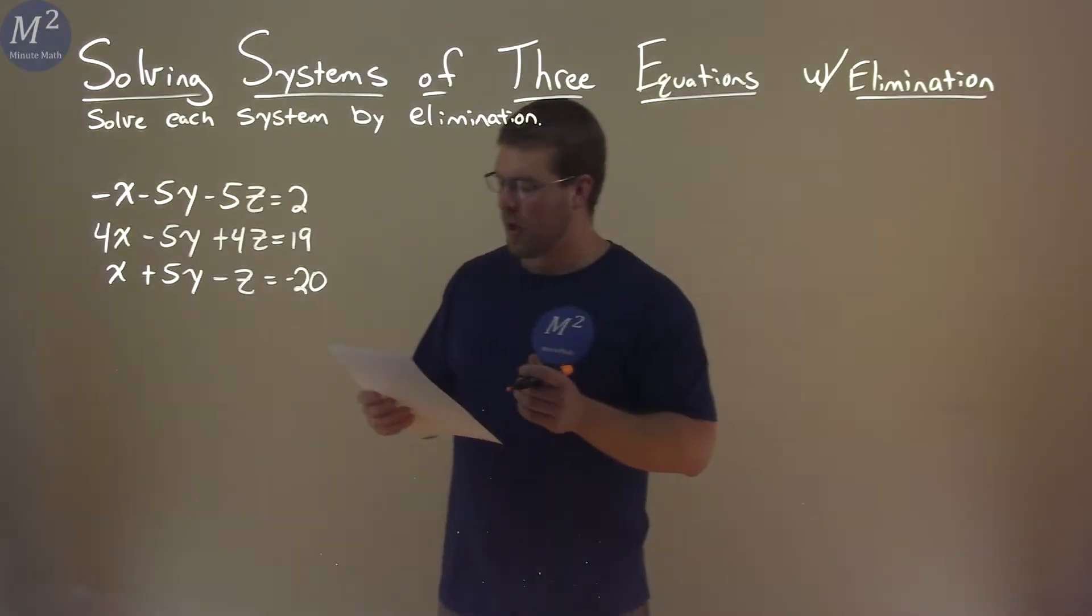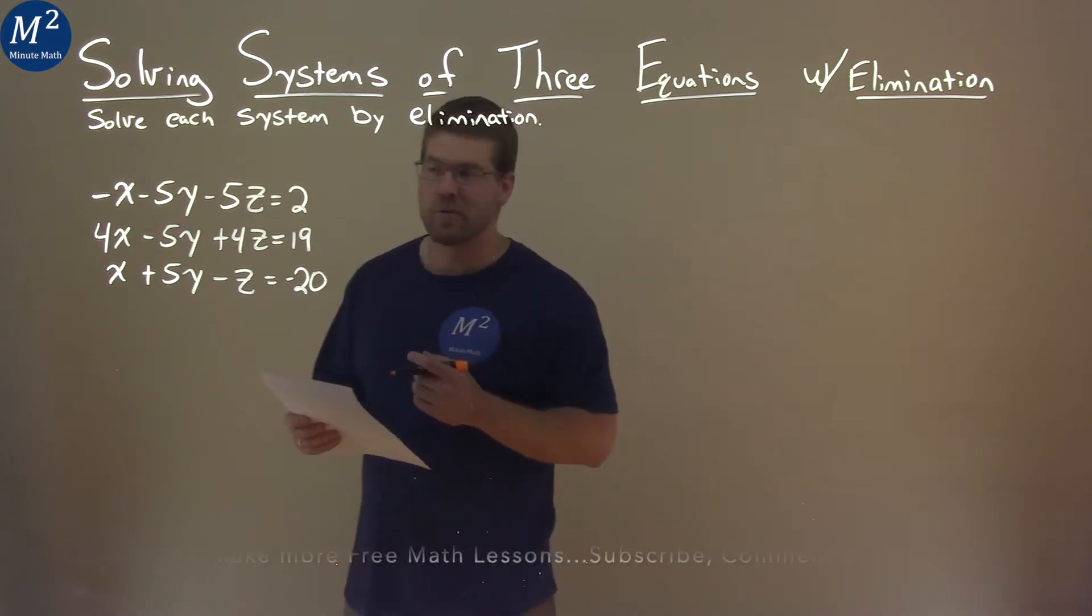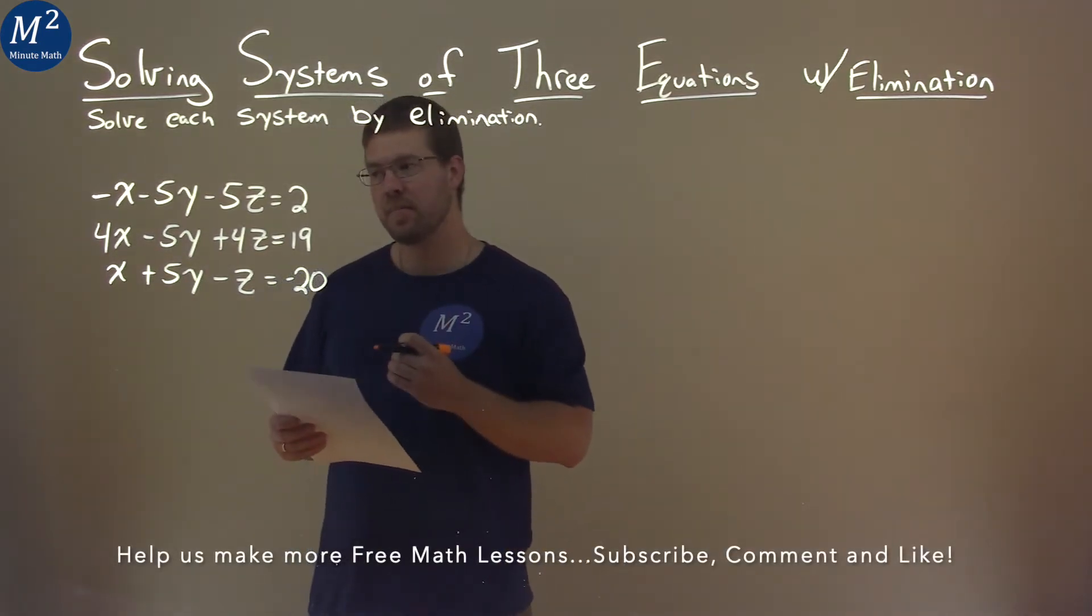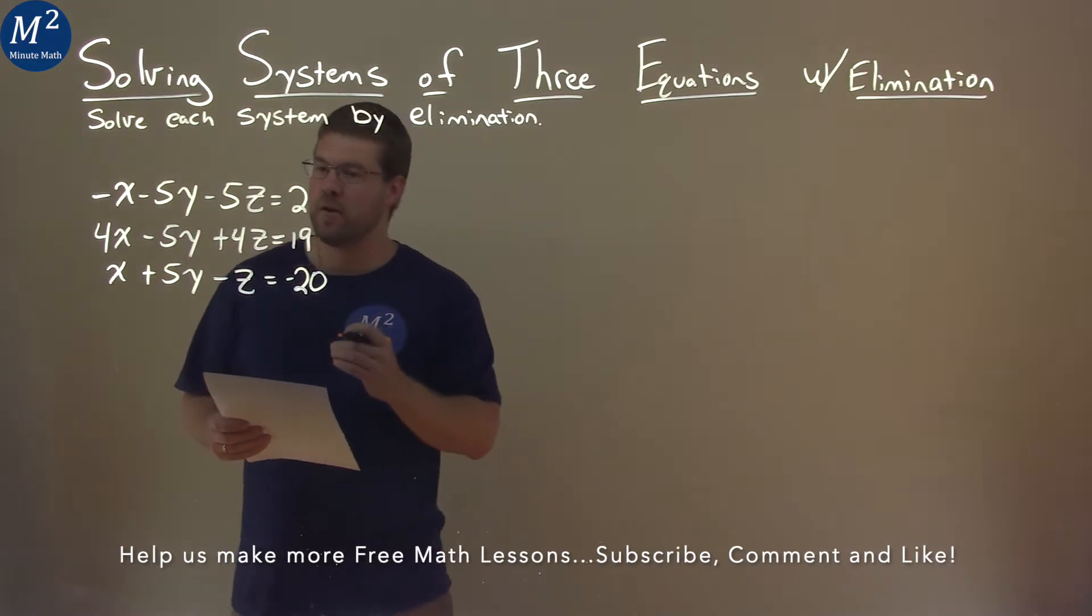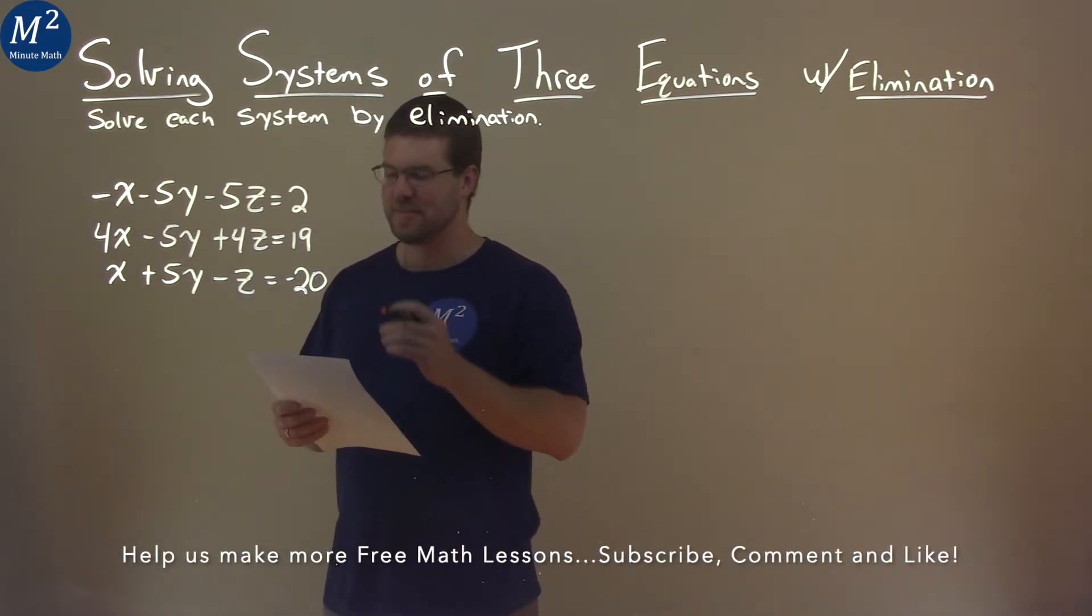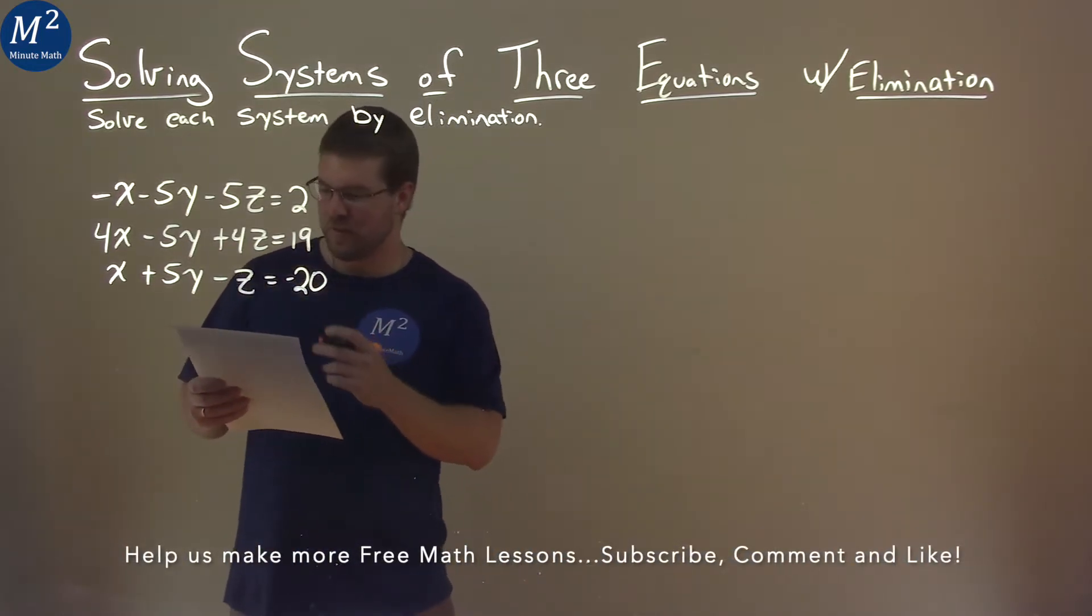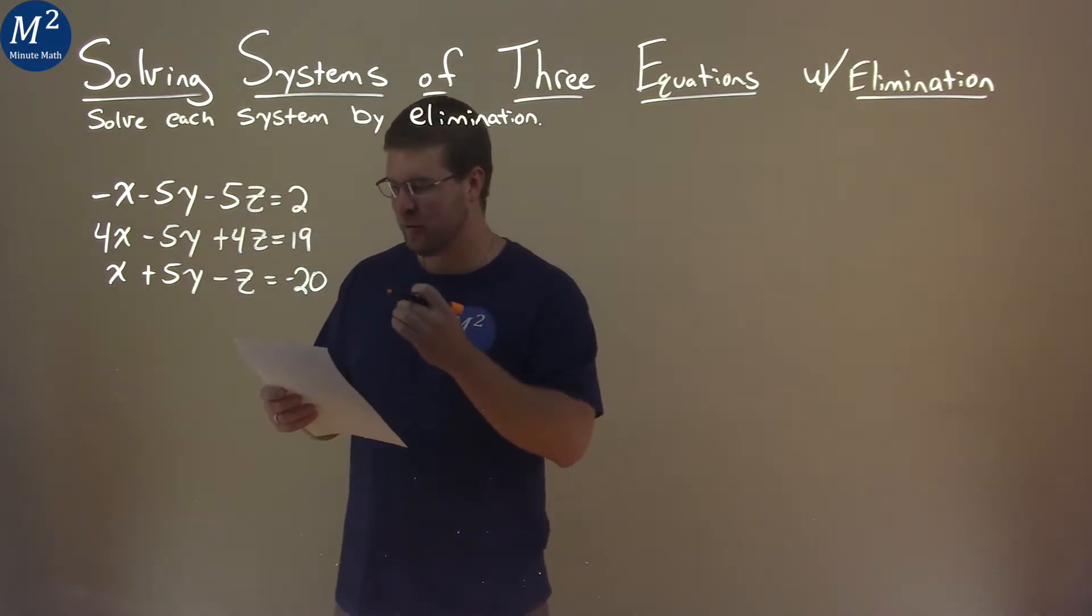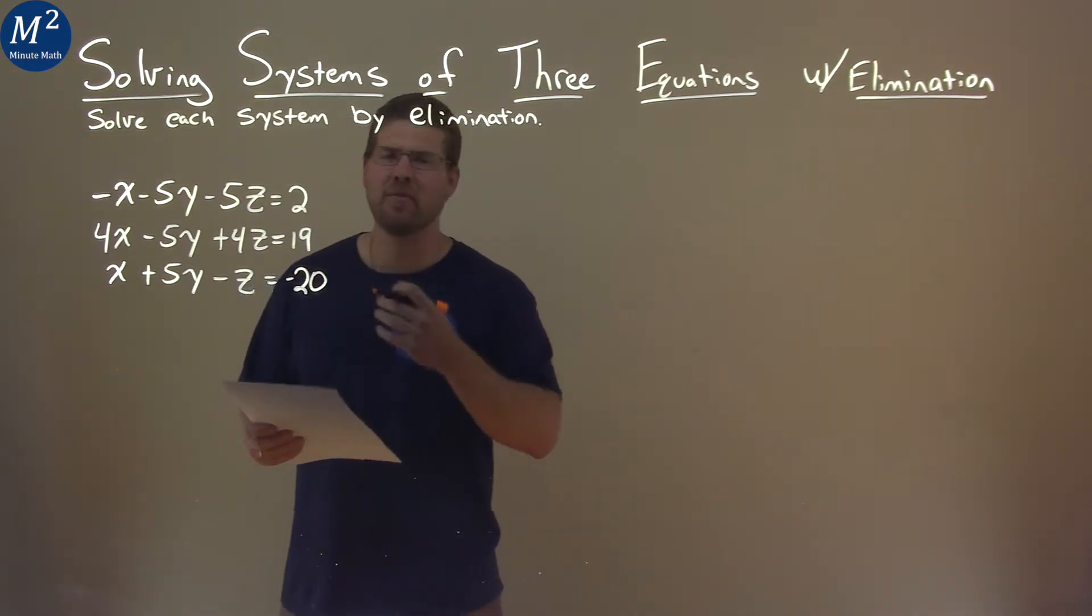We're given this problem right here: negative x minus 5y minus 5z equals 2, 4x minus 5y plus 4z equals 19, and x plus 5y minus z equals negative 20. We need to solve this using elimination.